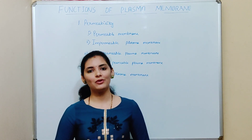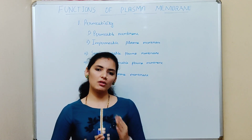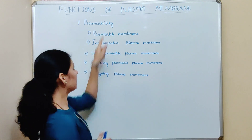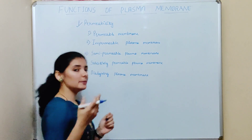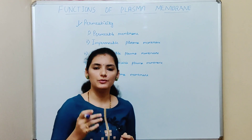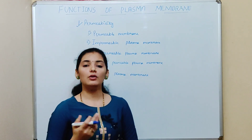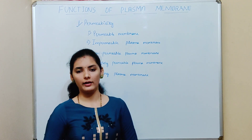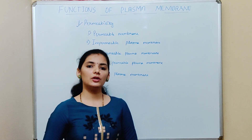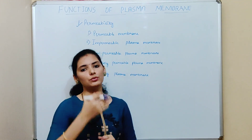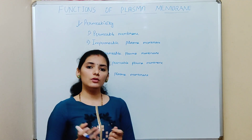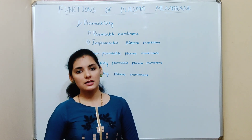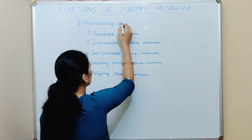Apart from acting as a barrier, the plasma membrane also performs many other functions. We'll discuss all those functions one by one. The first function is permeability. As the name indicates, permeability means which allows or which permeates — it allows the exchange of material in and out of the cell. It permeates the movement of molecules or substances into and out of the cell. All those substances which have the capacity to pass through the plasma membrane are called permeate molecules.